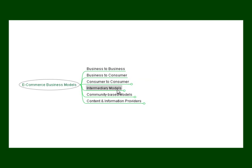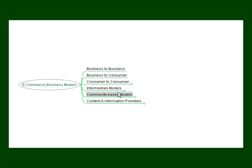Then there's what's known as the intermediary models. These are basically affiliate programs where other vendors pay you a commission to sell their products for them. Then there are the community-based models, where you're part of a large community of like-minded individuals and your business or niche is only focused on that particular group of people, pretty much closed to those outside that community, with a lot of networking taking place within that group.